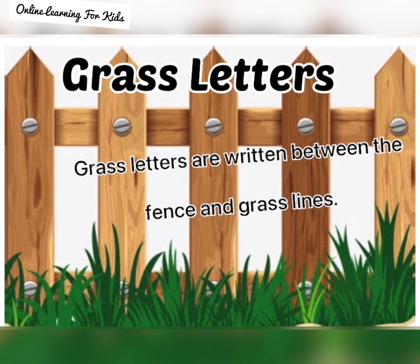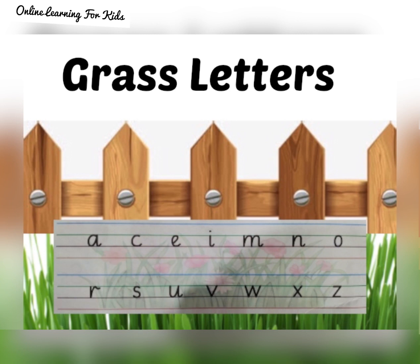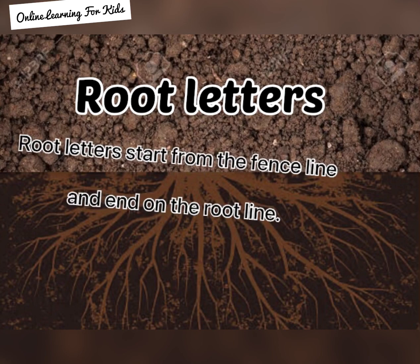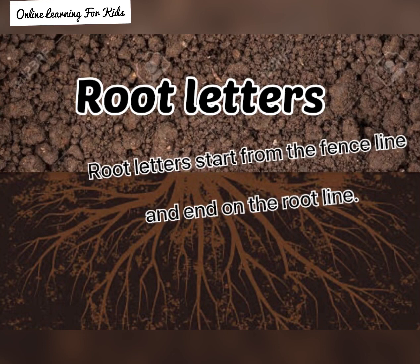The second group is grass letters. Grass letters are written between the fence line and the grass line. There are 14 grass letters: a, c, e, i, m, n, o, r, s, u, v, w, x, and z.